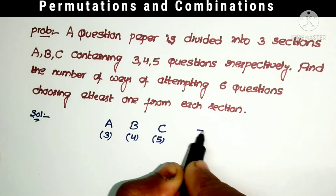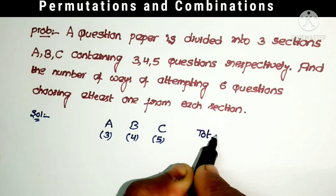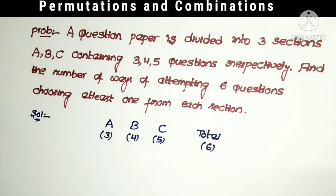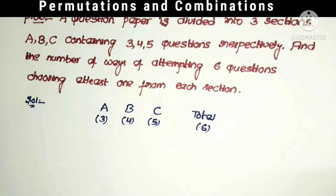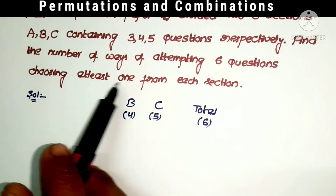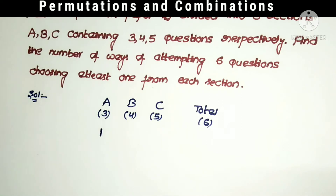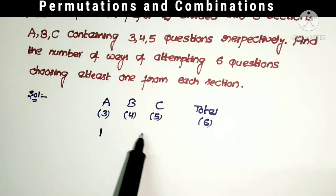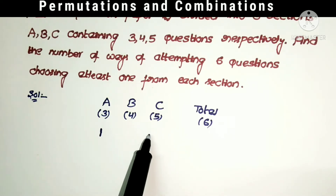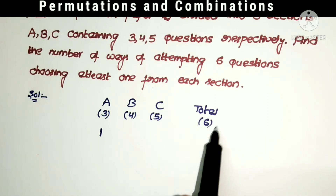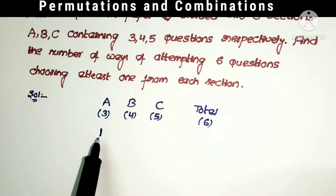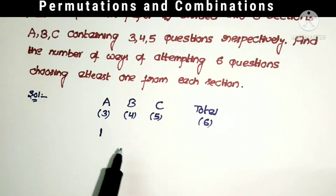We have to select a total of 6 questions with the condition of choosing at least 1 question from each section. If I select 1 question from the first section, then we have to select 5 questions from the remaining 2 sections.